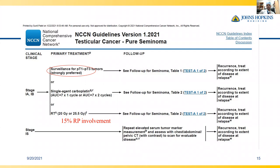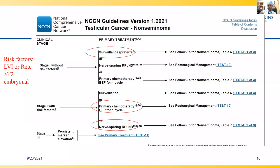Looking at treatment modalities: for pure seminoma Stage 1, surveillance is the predominant management approach. There is a roughly 15% chance of retroperitoneal involvement, so patients need to understand this risk — that's the rationale for frequent CT and interval imaging. For non-seminomatous Stage 1 without risk factors, surveillance is still a good option with the same 15% risk caveat. Other options include a primary RPLND or one cycle of chemotherapy.